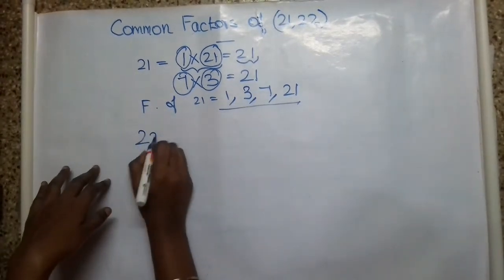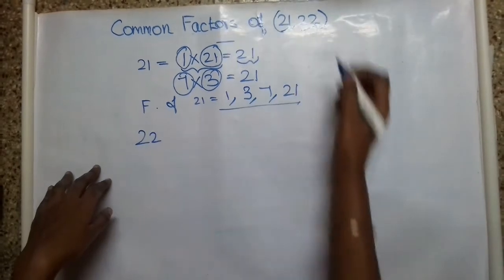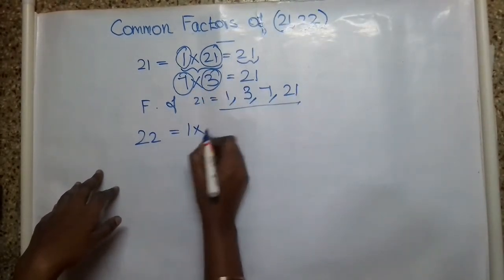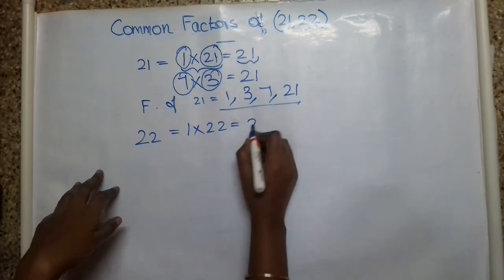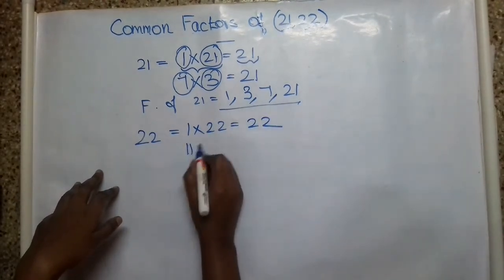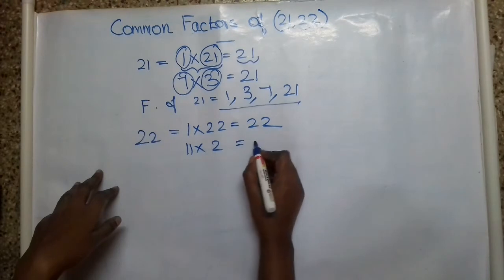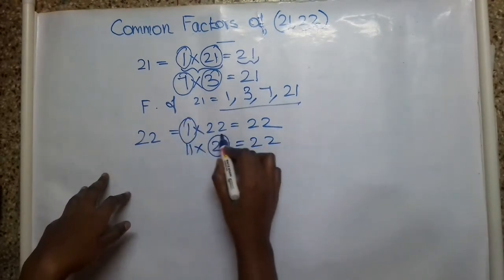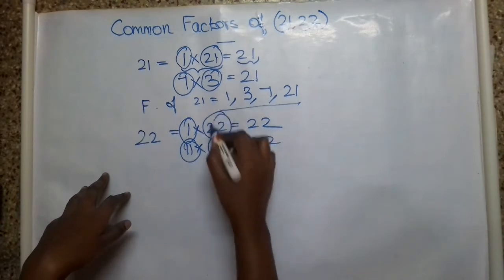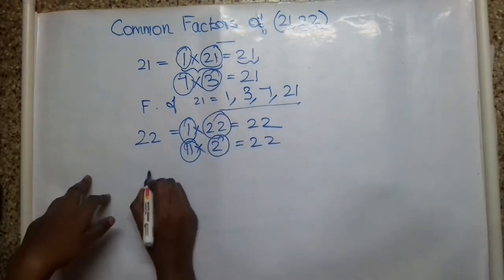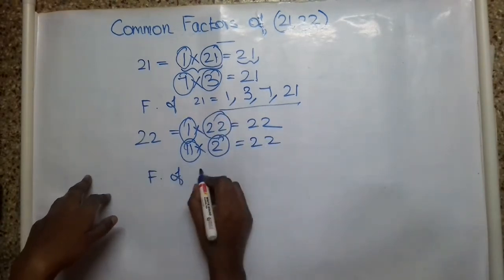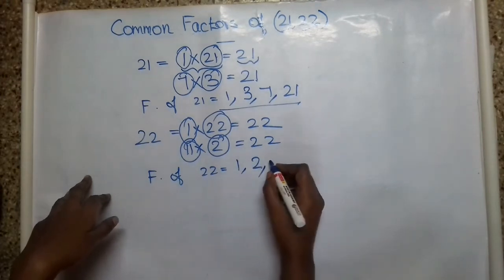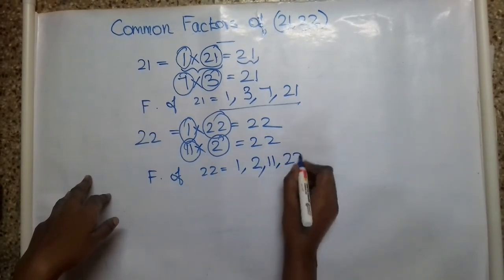We have completed the number 21. Now check the number 22. So 22 is 1 into 22 is 22. Then 11 into 2 is also 22. So the factors of 22 are 1, 2, 11 and 22.